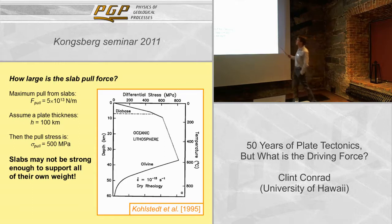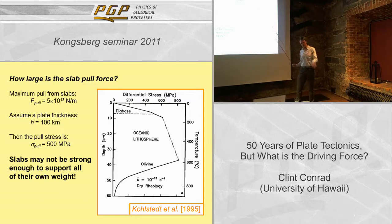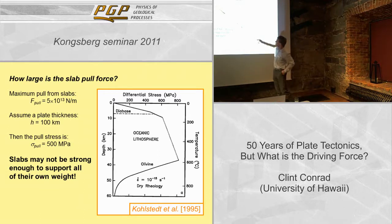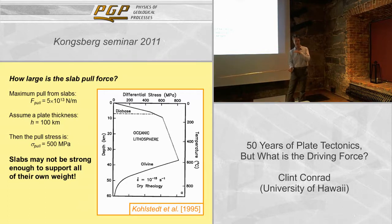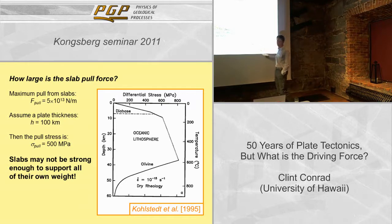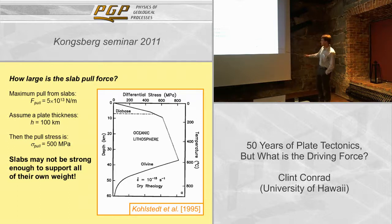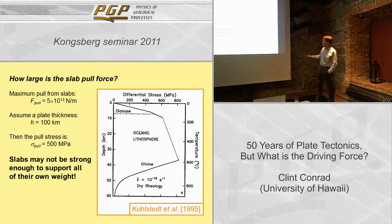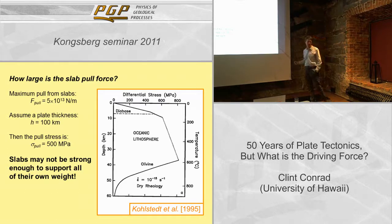Can you transmit the entire slab pull force from the descending slab to the surface plate? If the maximum pull from the slabs is 5 × 10¹³ N/m, distributed over a 100-kilometer-depth plate, then the maximum average pull stress is 500 megapascals. This is very large — it's in fact close to the estimated maximum differential stress that rocks can withstand, from Goetze 1978, where the maximum is around 500 megapascals.